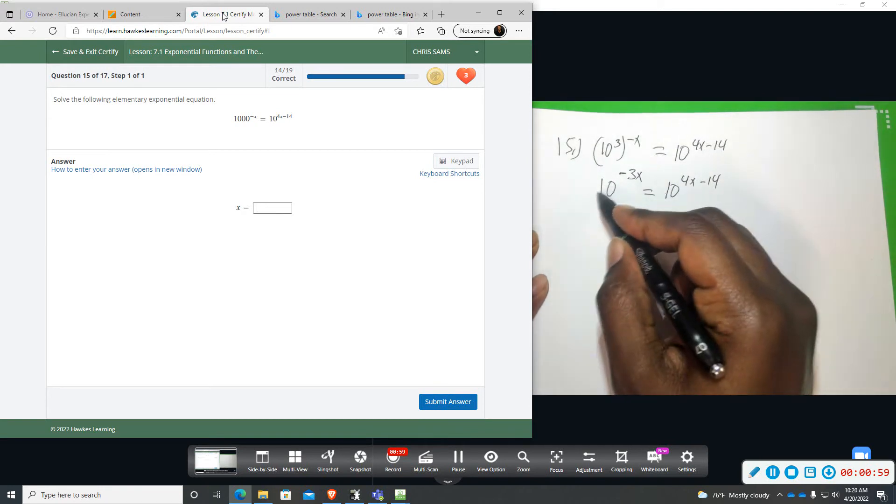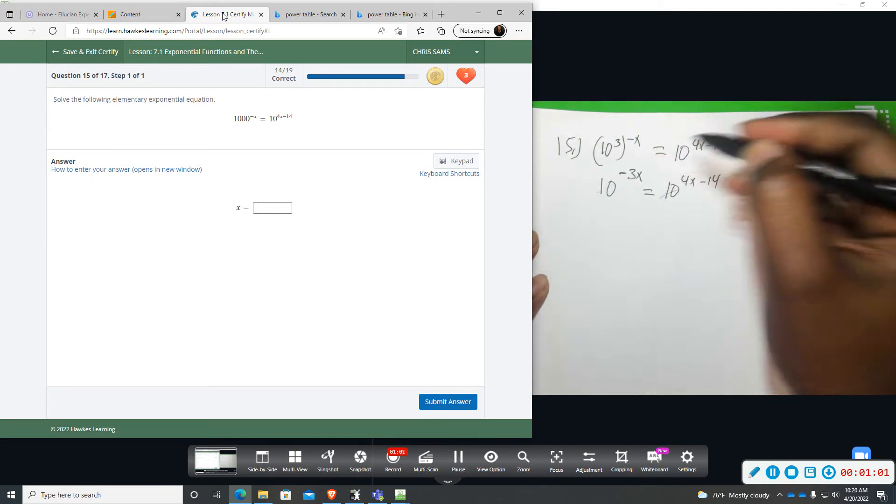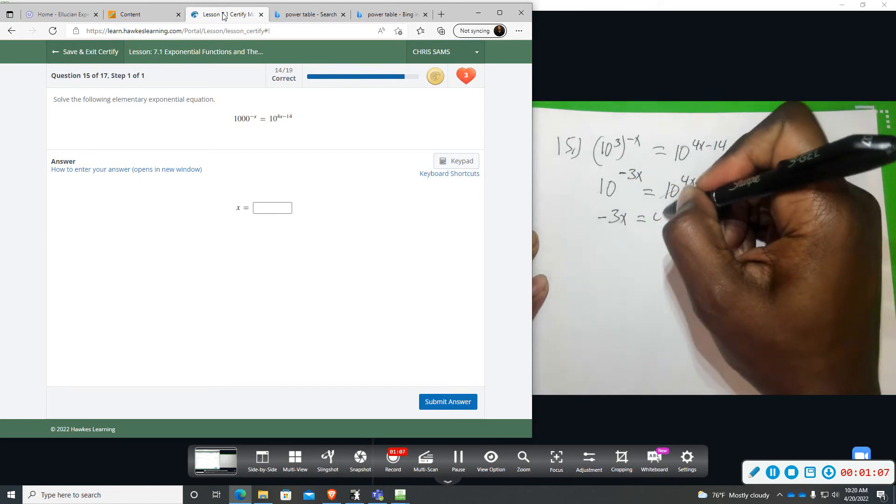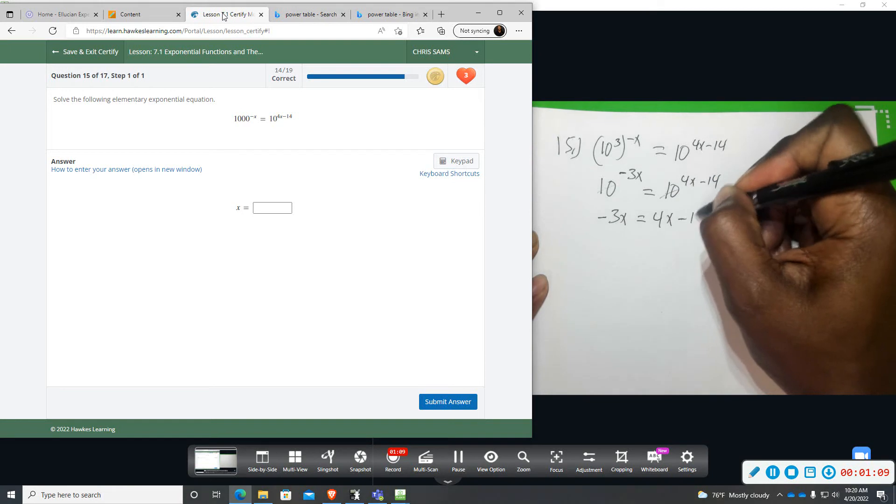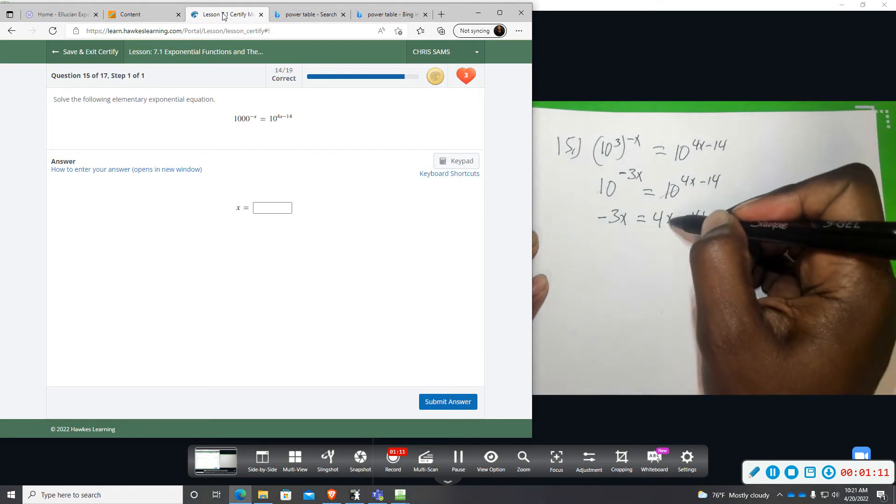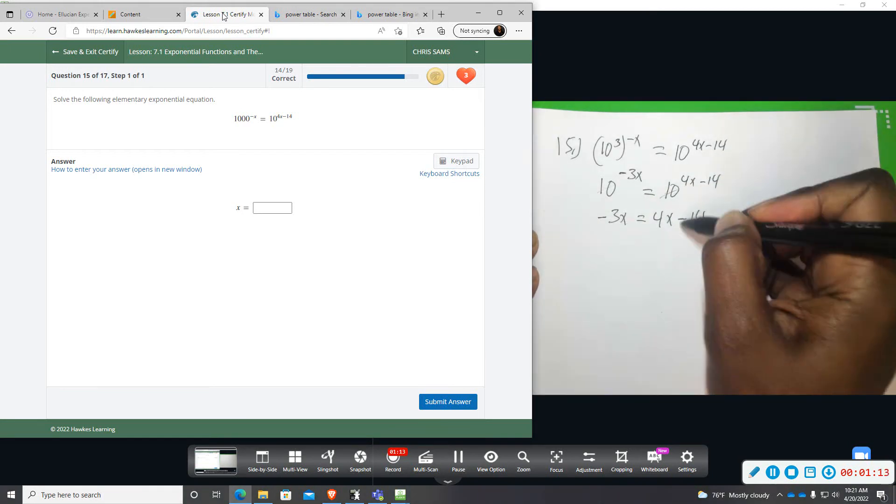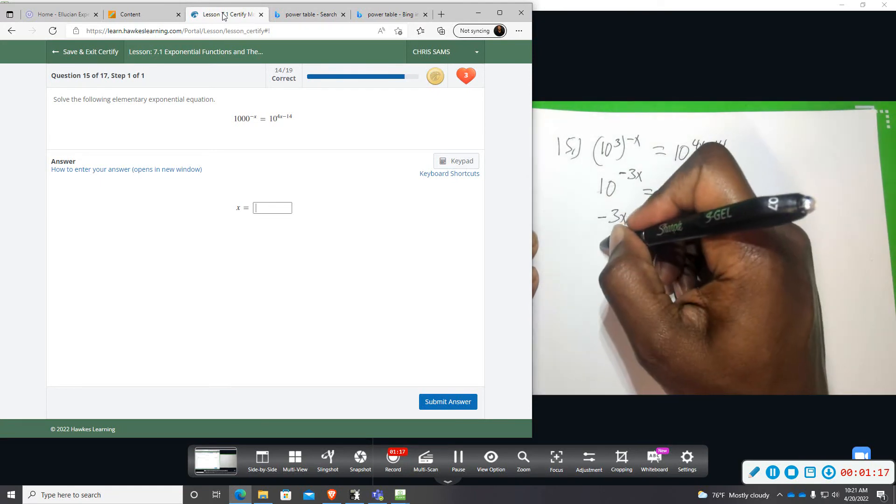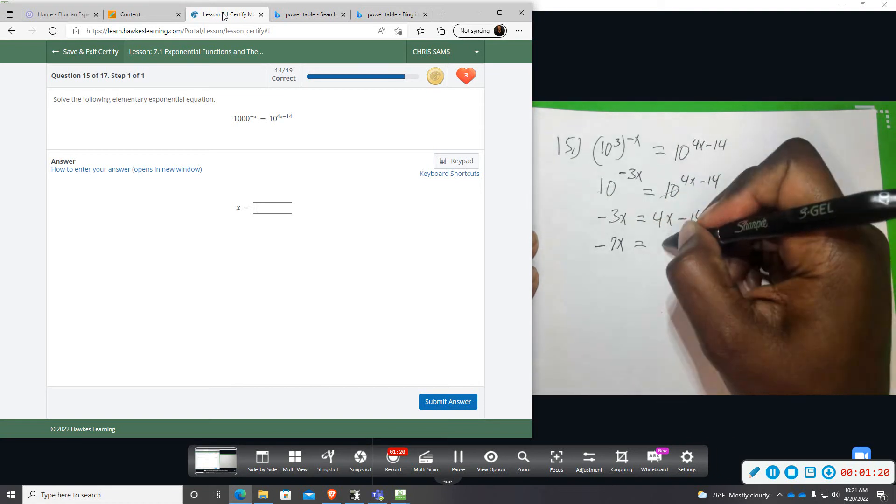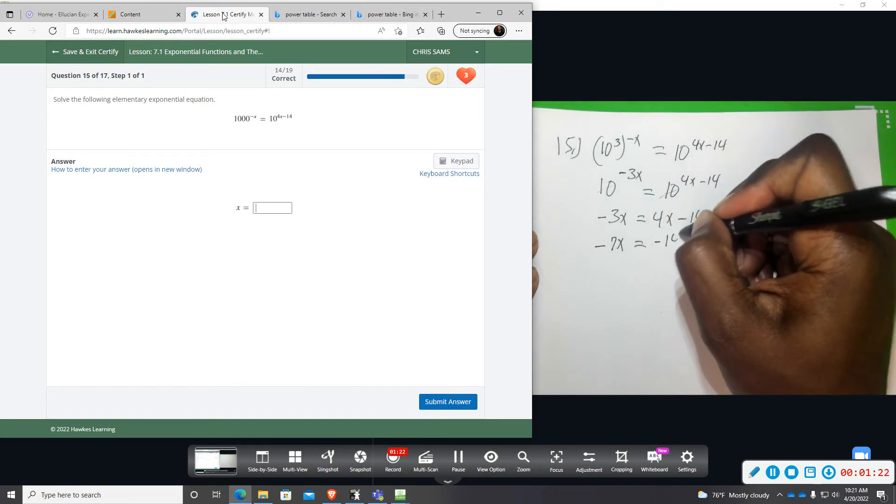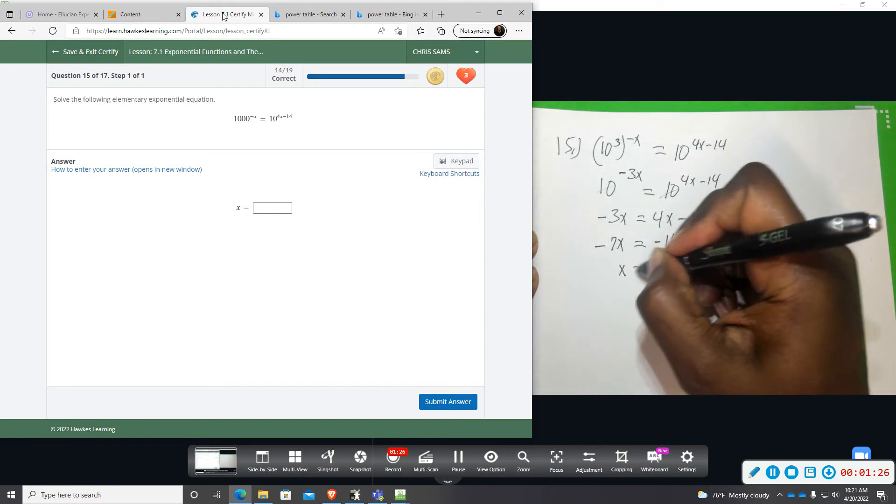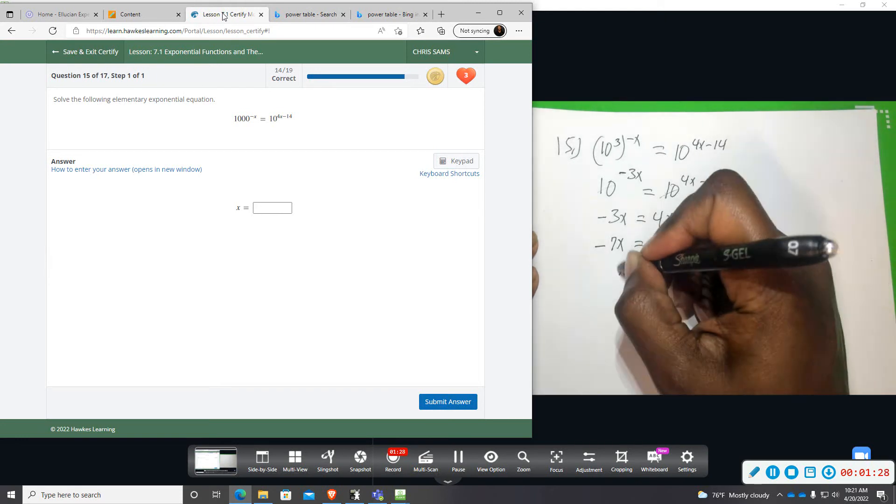Same base. We can ignore that and then focus on the negative 3x is equal to 4x minus 14. I will move the 4x over with the 3x. I will subtract 4x and when I subtract it from this side I get a negative 7x is equal to a negative 14. Divide by 7 on both sides and that will leave you with x equals a positive 2.